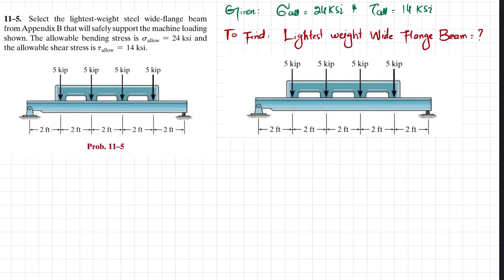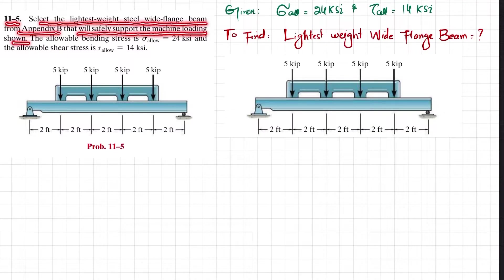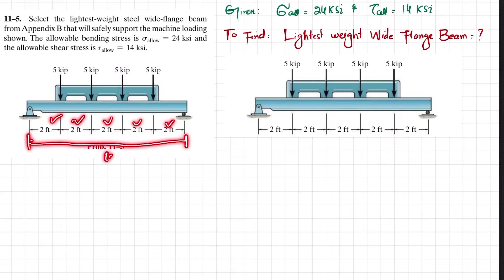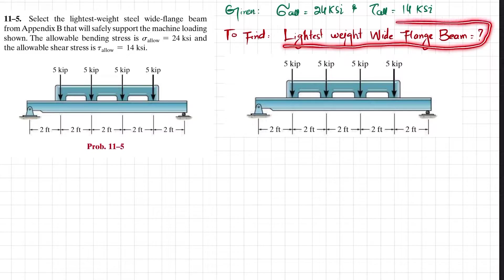Welcome back, Problem 11-5. The statement is: select the lightest weight steel wide flange beam from Appendix B that will safely support the machine loading shown. The allowable bending stress is 24 ksi and allowable shear stress is 14 ksi. The beam loading due to the machine is given, and the total length of the beam is 10 feet.